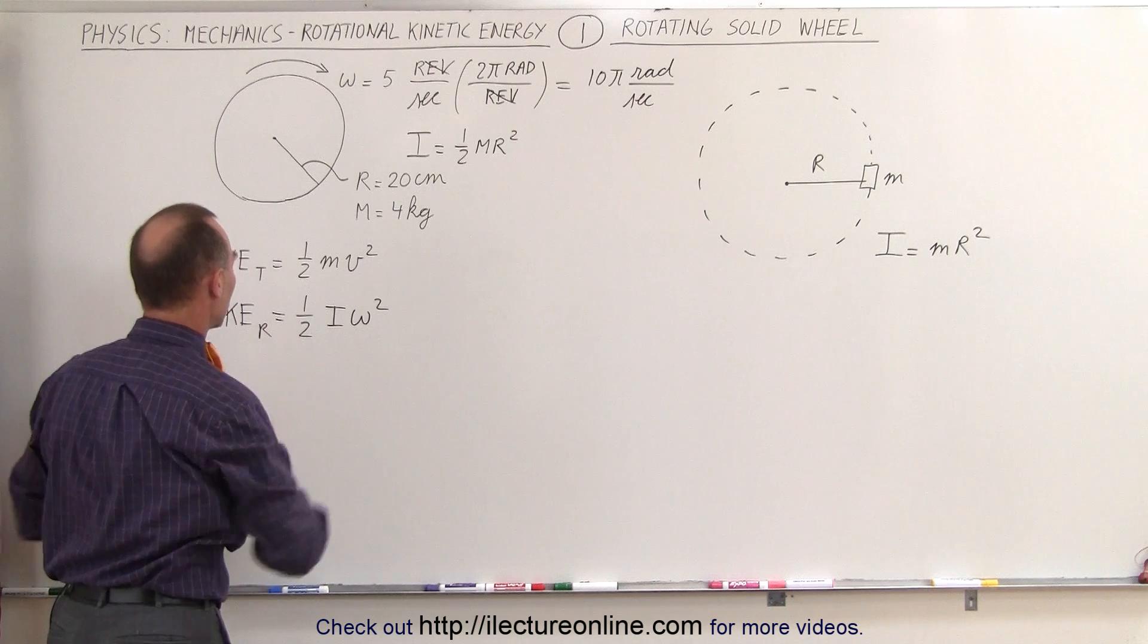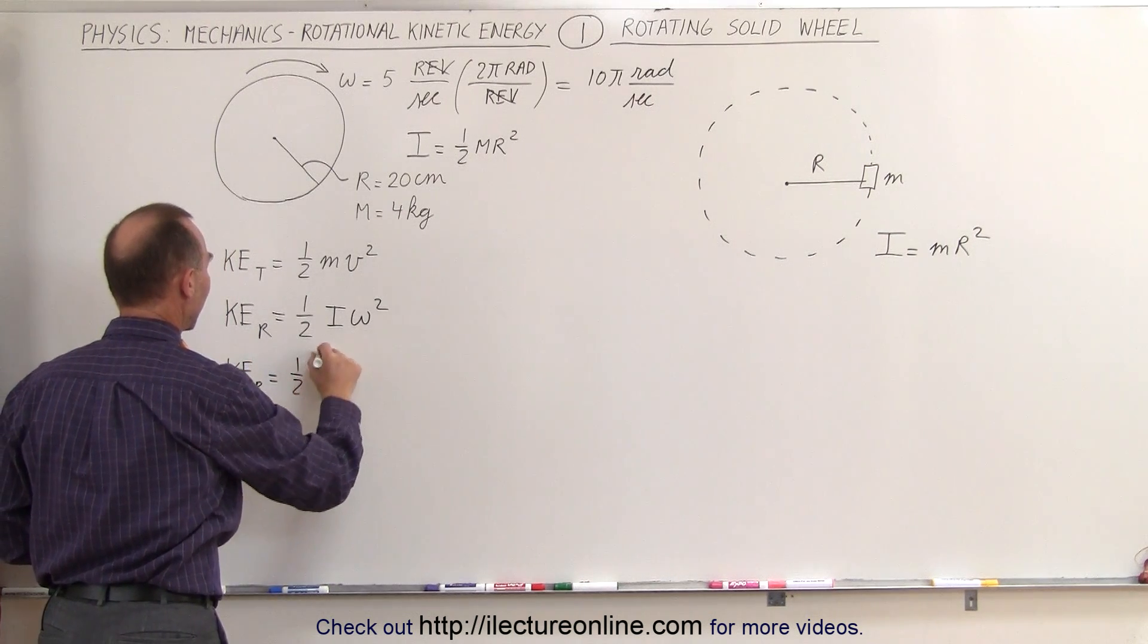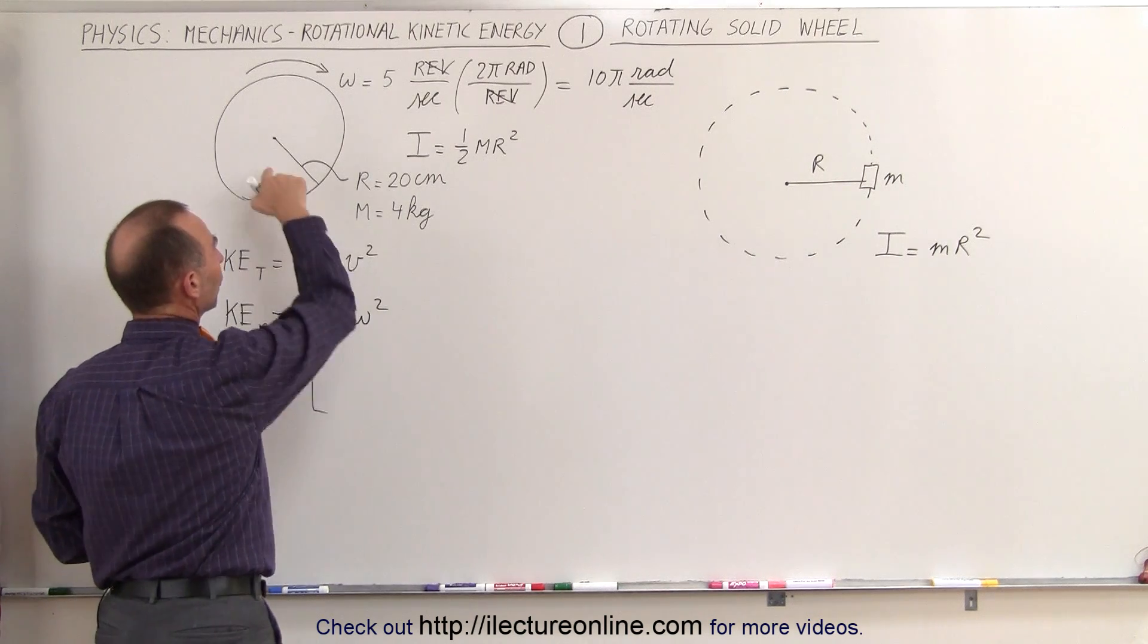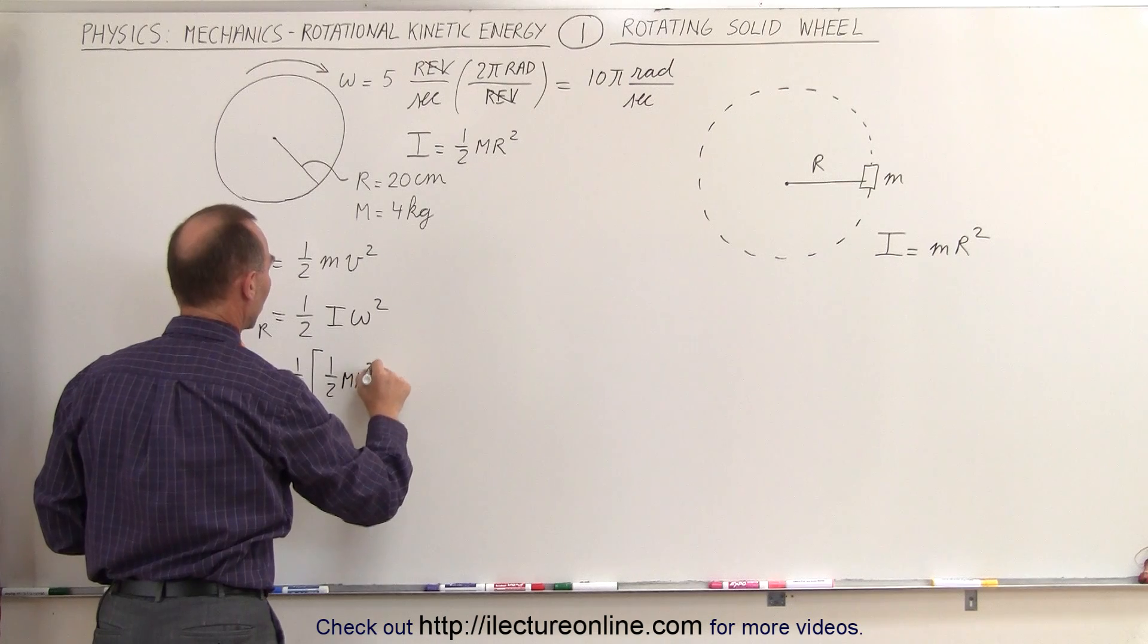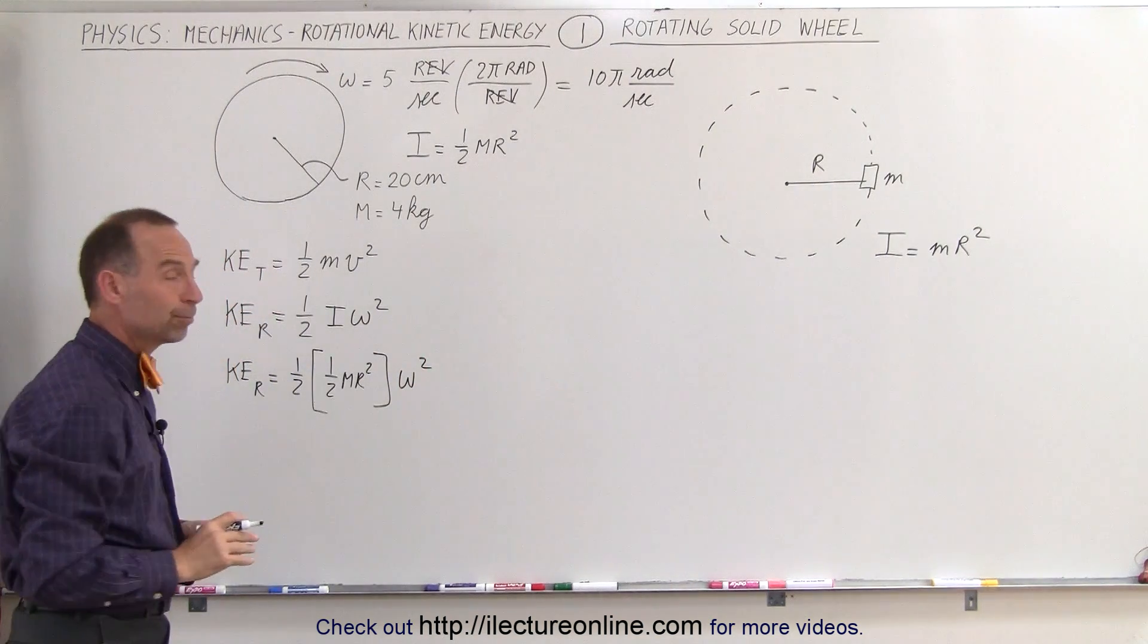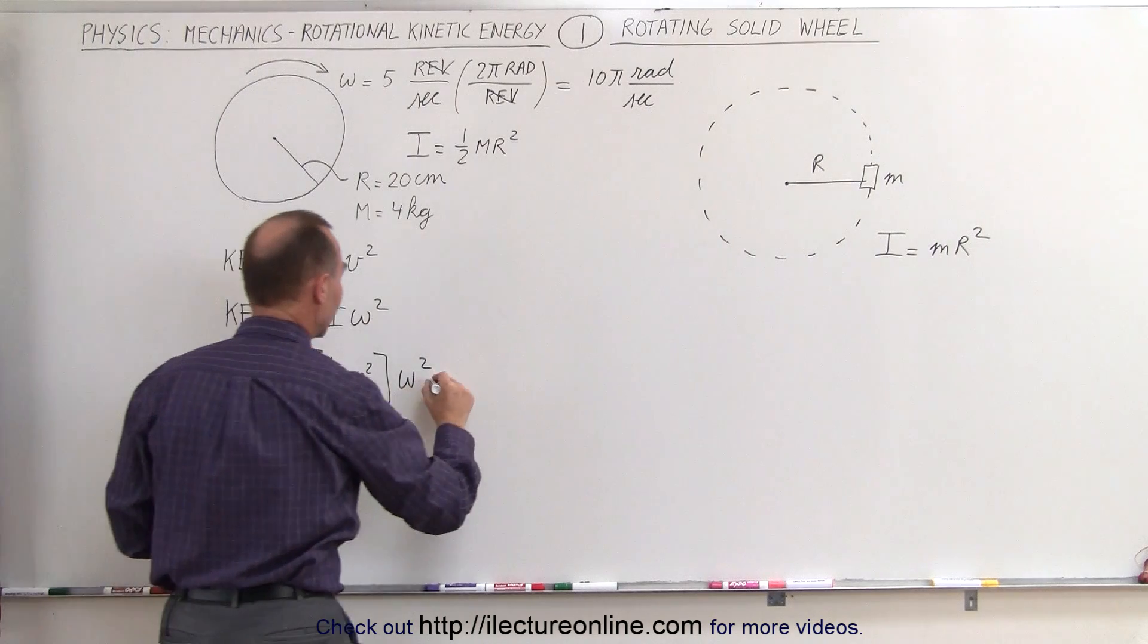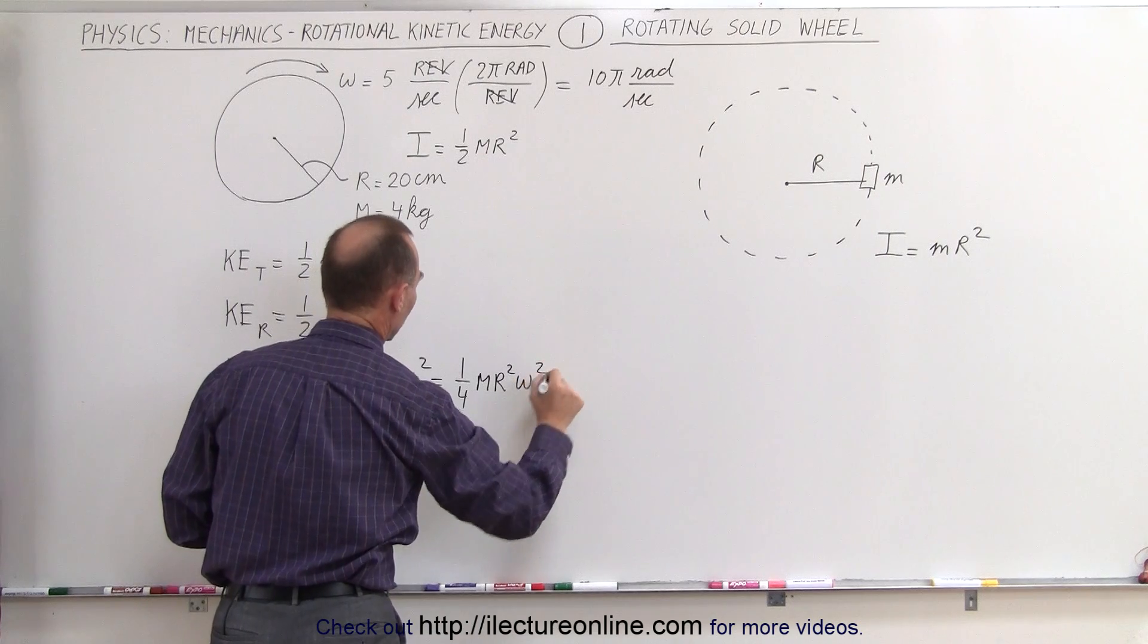If we plug that into the equation here, we get the rotational kinetic energy is equal to ½ times the moment of inertia for a solid disk, which is ½ the mass times the radius squared, times ω² for the kinetic energy. Now simplifying this, this is equal to ¼mr²ω².